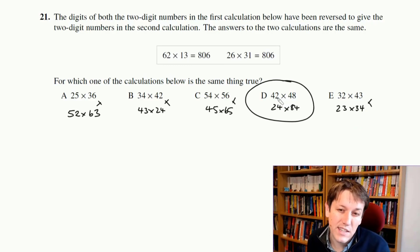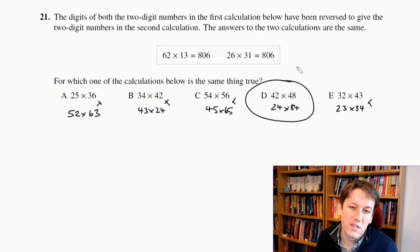And then you can also look at D and say, well, yeah, that is right, because look, 48 is double 24, and 84 is double 42, so those calculations are going to give the same thing. Either way, the answer is D.